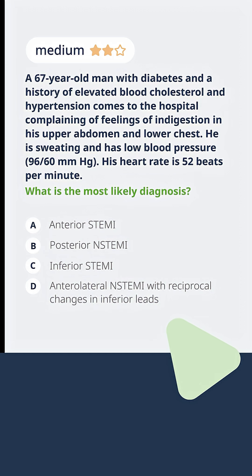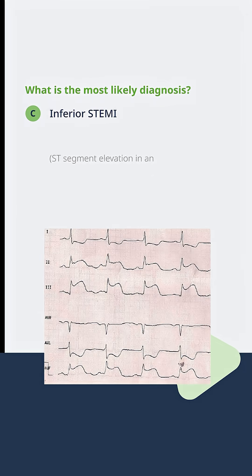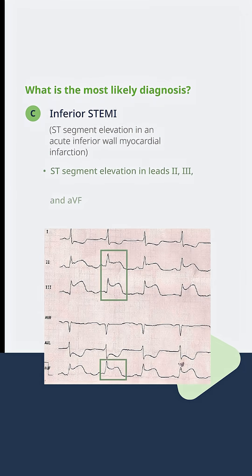This is an acute inferior wall myocardial infarction. Notice — let's look at leads 2, 3, and AVF. Remember, those are the inferior leads: 2, 3, and AVF. Look at the ST elevation that you see here. That ST elevation, now marked in the green boxes, is quite impressive — it's probably about three or three and a half millimeters.